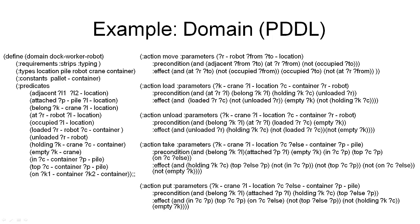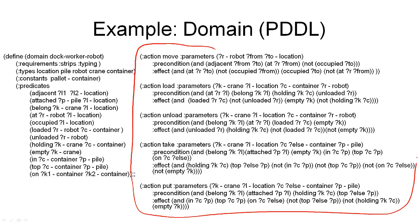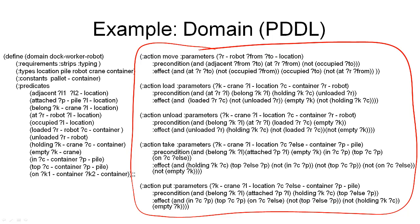Here is an example of a planning domain in the PDDL syntax. The core of the representation are the planning operators, shown on the right. These are the five operators defined for the dock worker robot domain. They're called actions in PDDL, but these are operators — as you can see, they're parameterized and have variables, whereas actions would be ground. So we have the move action, the load action, the unload action, the take action, and the put action — that is the complete set of operators for the dock worker robot domain.